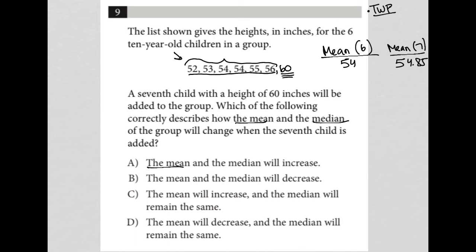So answer choice A says the mean will increase. So that's pretty good. Answer choice B says the mean will decrease, so that's gone. C says the mean will increase, but D says the mean will decrease, so D is gone. So based upon the mean, we're able to knock out two of the answer choices.